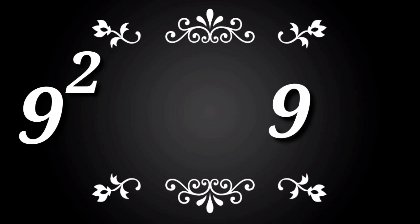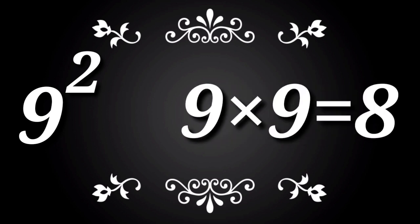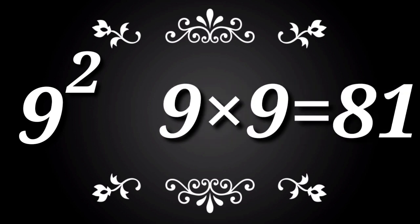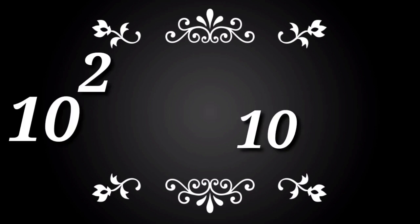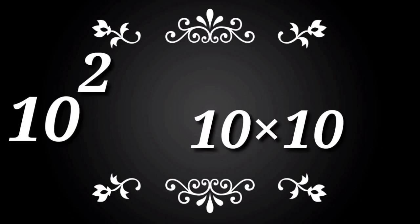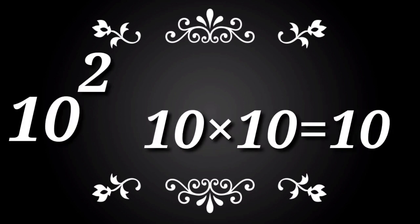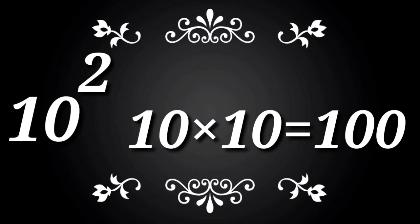9 square. 9 into 9 is equal to 81. 9 9s are 81. 10 square. 10 into 10 is equal to 100. 10 10s are 100.